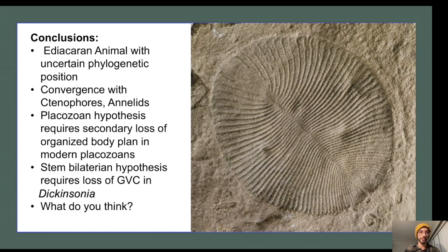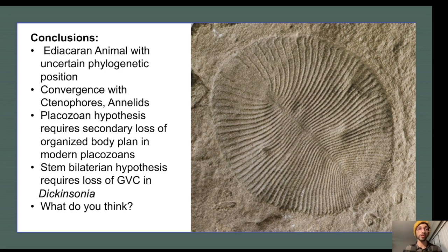In summary, Dickinsonia was an Ediacaran animal whose phylogenetic position is still unclear. While many elements of its body plan appear to be convergent with ctenophores and annelids, mischaracterizations of Dickinsonia as a worm or jelly still persist in the scientific literature. The placements I find most appealing are a placozoan affinity, which requires the loss of body organization through miniaturization, and a stem bilaterian affinity, which would require the loss of a GVC in Dickinsonia's earliest ancestor. What are you most convinced by? Are there any phylogenetic positions I didn't mention that you think have merit? I'd love to hear your ideas in the discussion board. Thank you so much for listening.